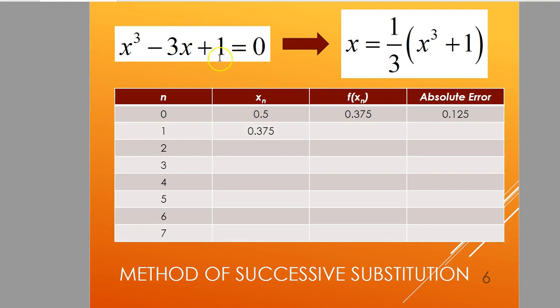Earlier you were given x³ - 3x + 1 = 0. You have to first be able to transform it into another form wherein you can isolate one of the x's.